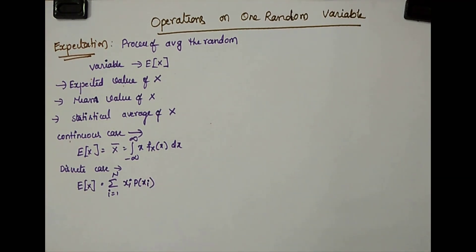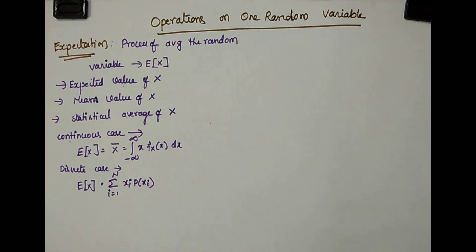By using these two formulas, you can find the expectation of the random variable. Expectation of the random variable is nothing but the mean of the random variable. In general, for numerical or real values, mean is just the mean. But for a random variable, mean is nothing but expectation.